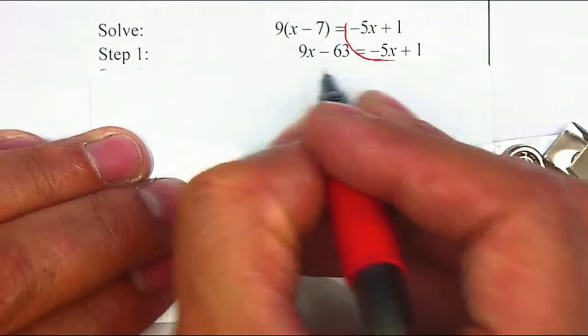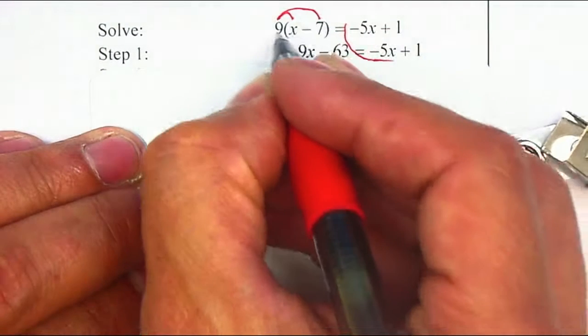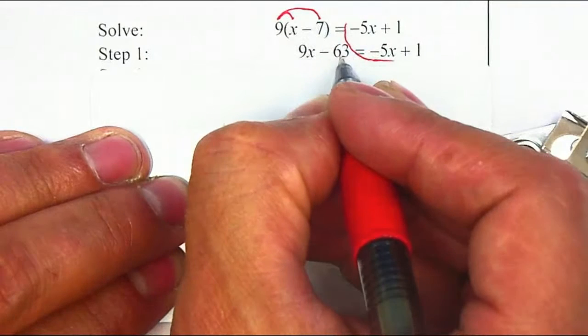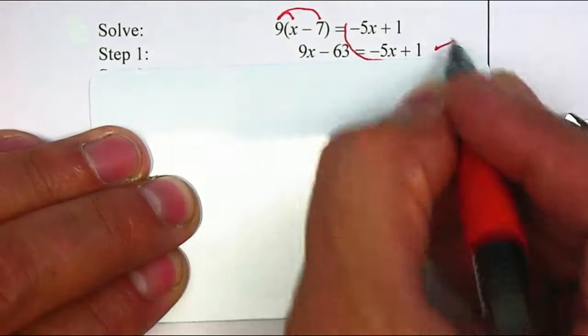Let's see, on the first step, they used the distributive property. 9 times x is 9x, 9 times negative 7 is negative 63. The right-hand side is exactly the same, so that step is correct.